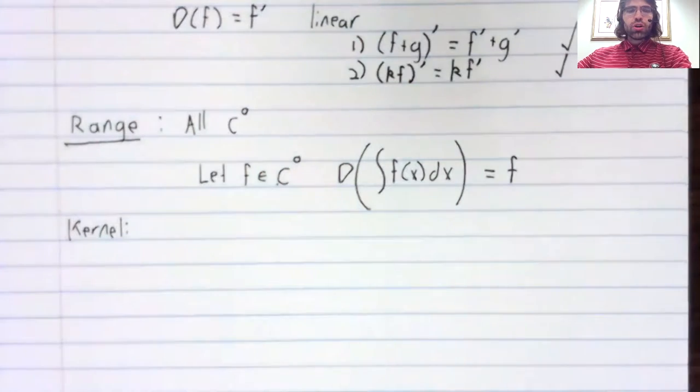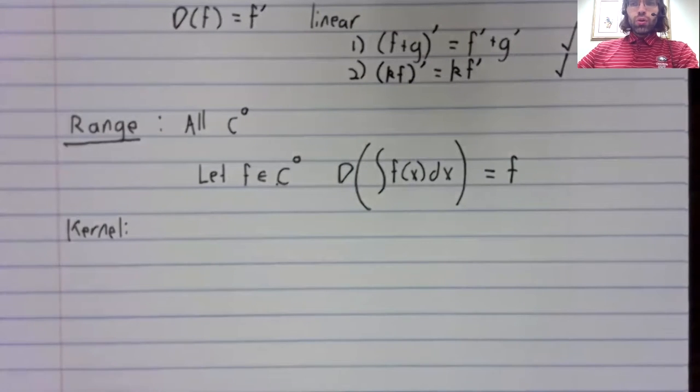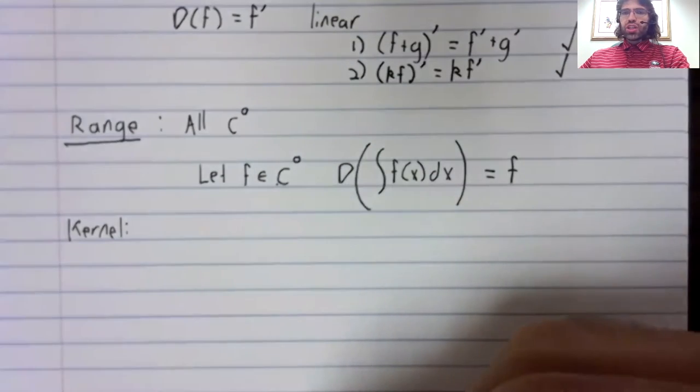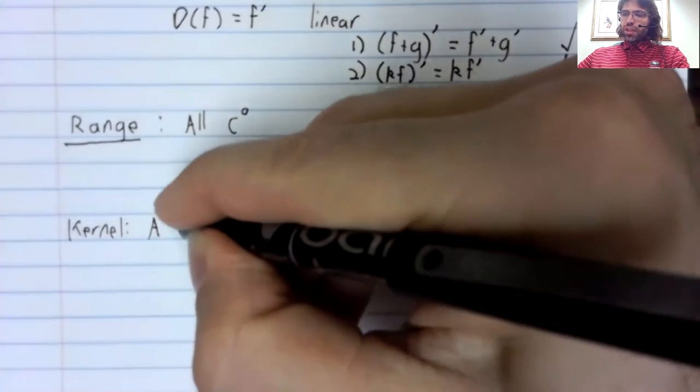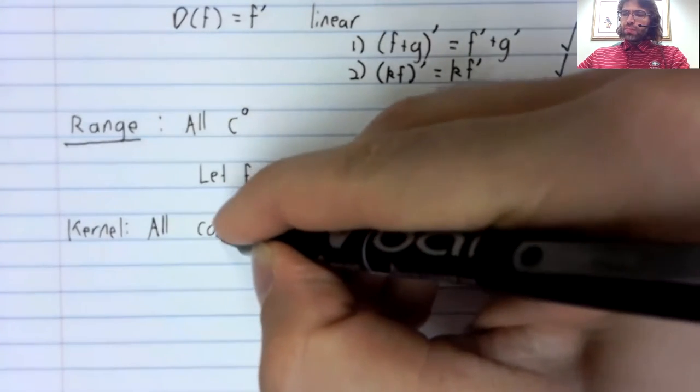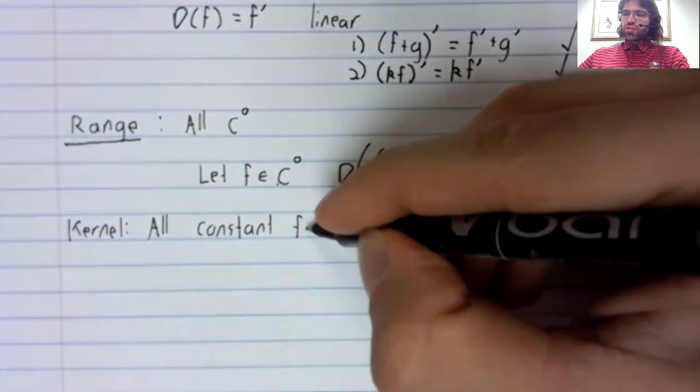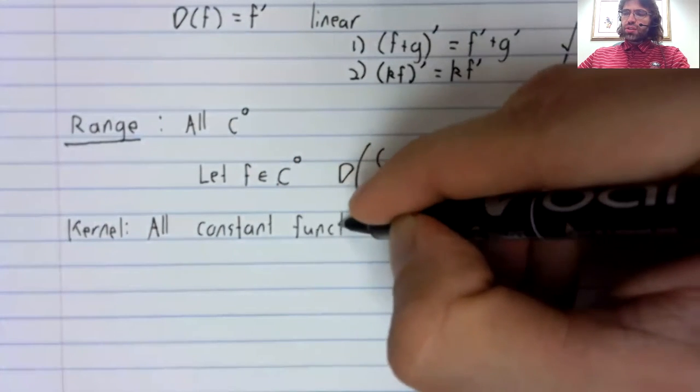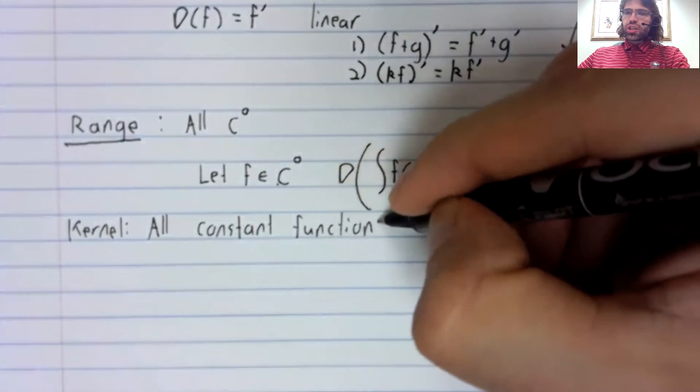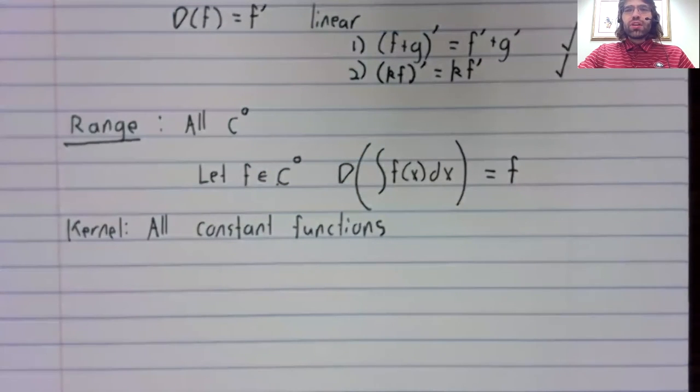What about the kernel? The kernel was the set of all functions whose derivative is the zero function. And those are the constant functions. The derivative of a constant function is zero.